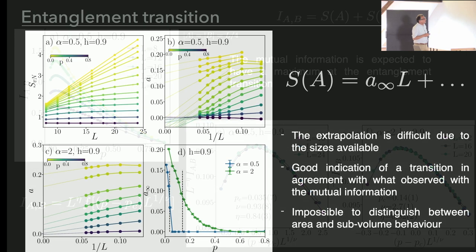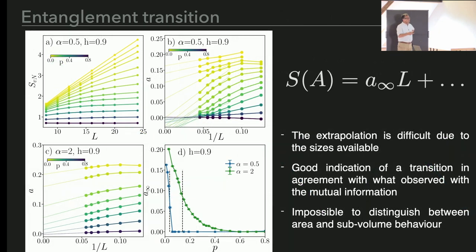In order to understand better the location of the transition, we also explored the entropy. Essentially we are looking for a volume law, and we are searching for how this pre-factor of the L-dependence scales with P. Of course, we are not able to see a sharp transition. This is what we get in various cases for finite alpha. If we combine these results with the mutual information, then we get quite good agreement.